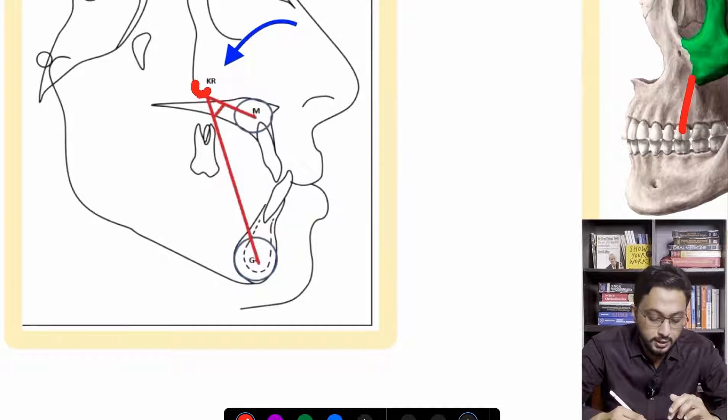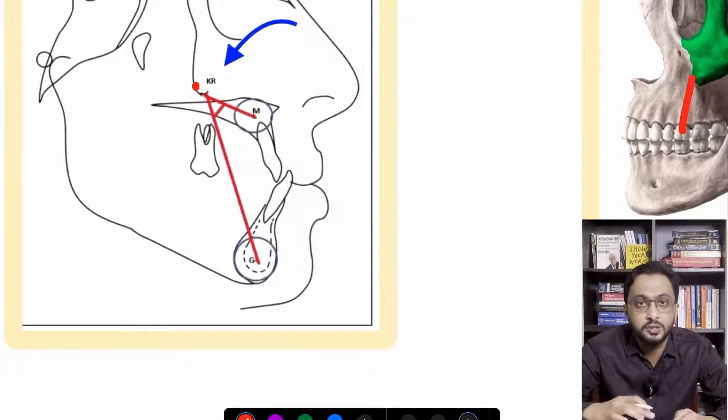and the lowest point on the outline of Zygoma corresponds to the first molar. So this is the point you can see here, which is called the Key Ridge.